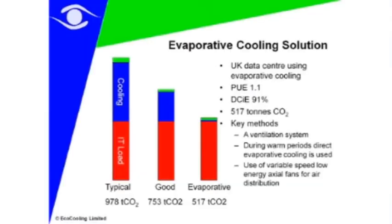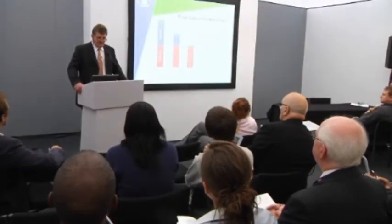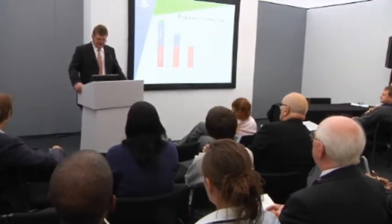If we use a ventilation system and evaporative cooling instead of refrigeration, it is technically possible to achieve a PUE of 1.1. That's an incredible level of saving — in some cases it looks too good to be true — but what I'll try to explain over the next few minutes is how we really achieve that using simple engineering in a simple modular system designed specifically for the IT sector.